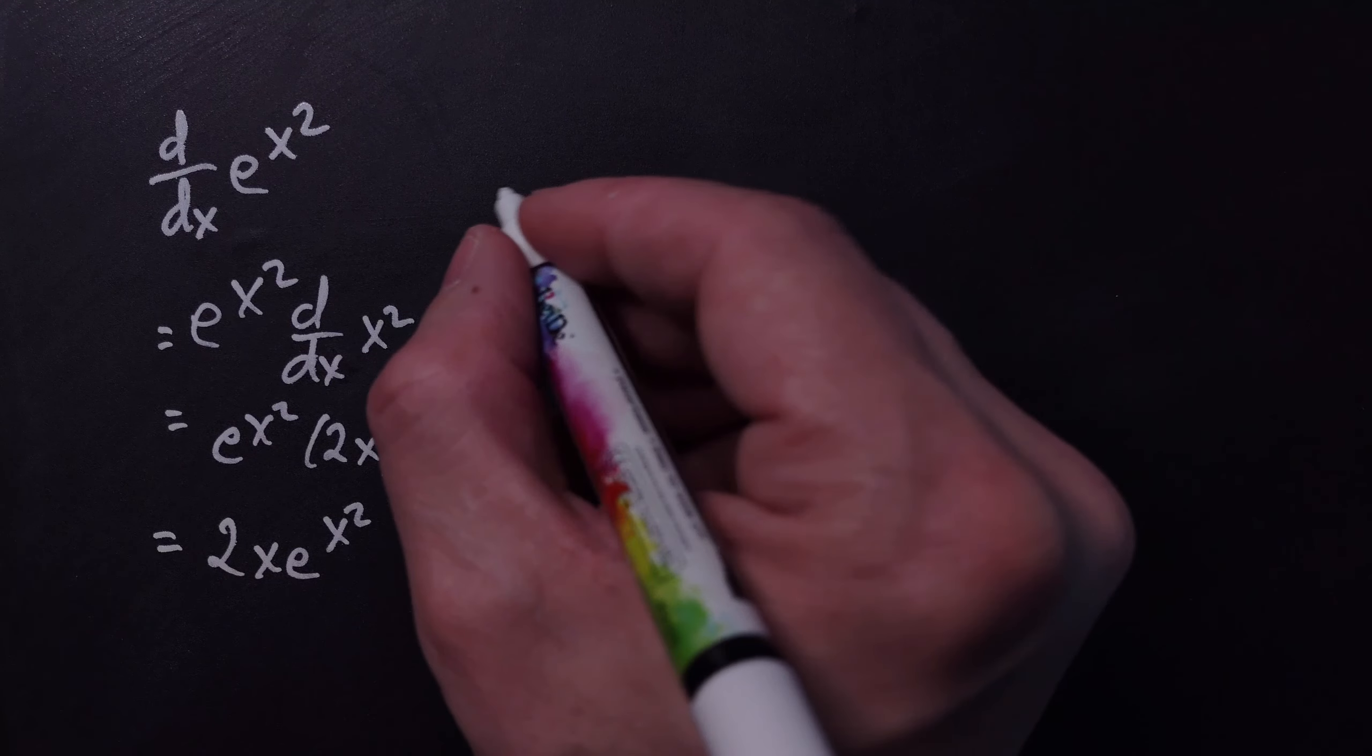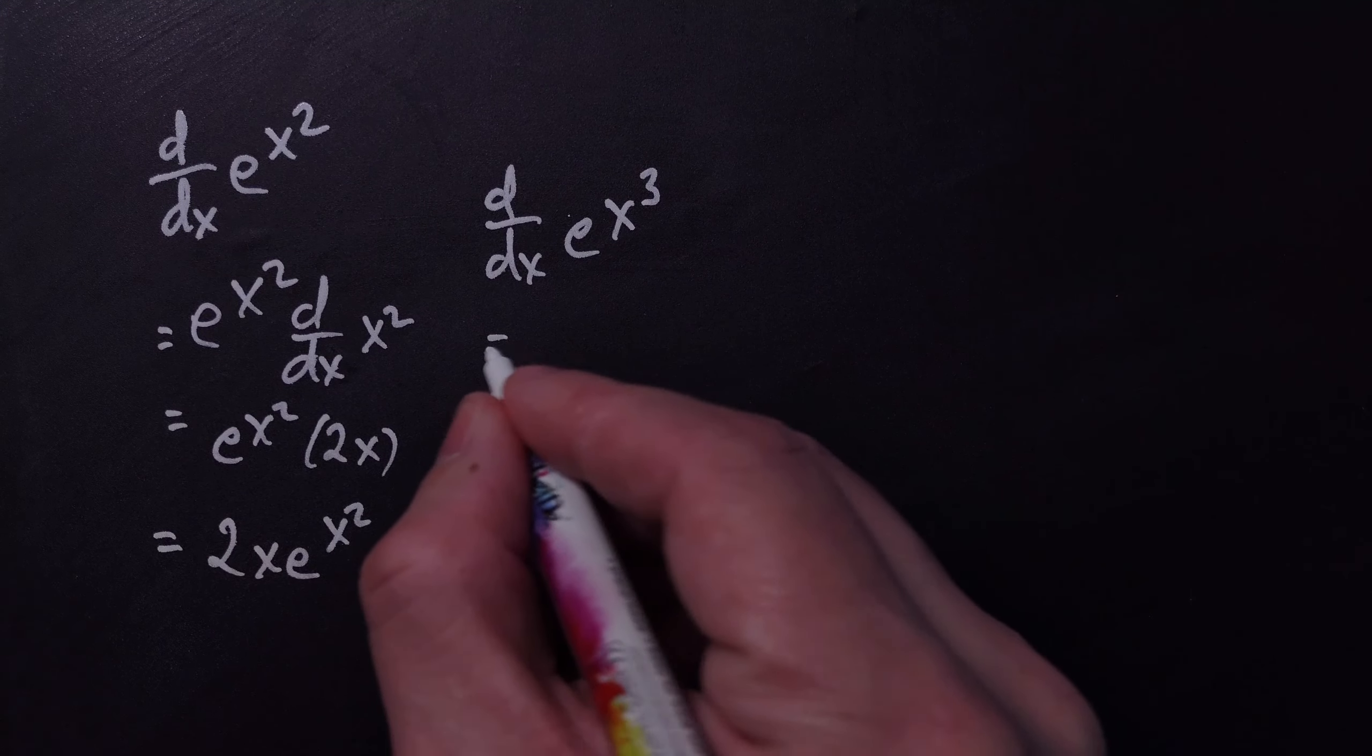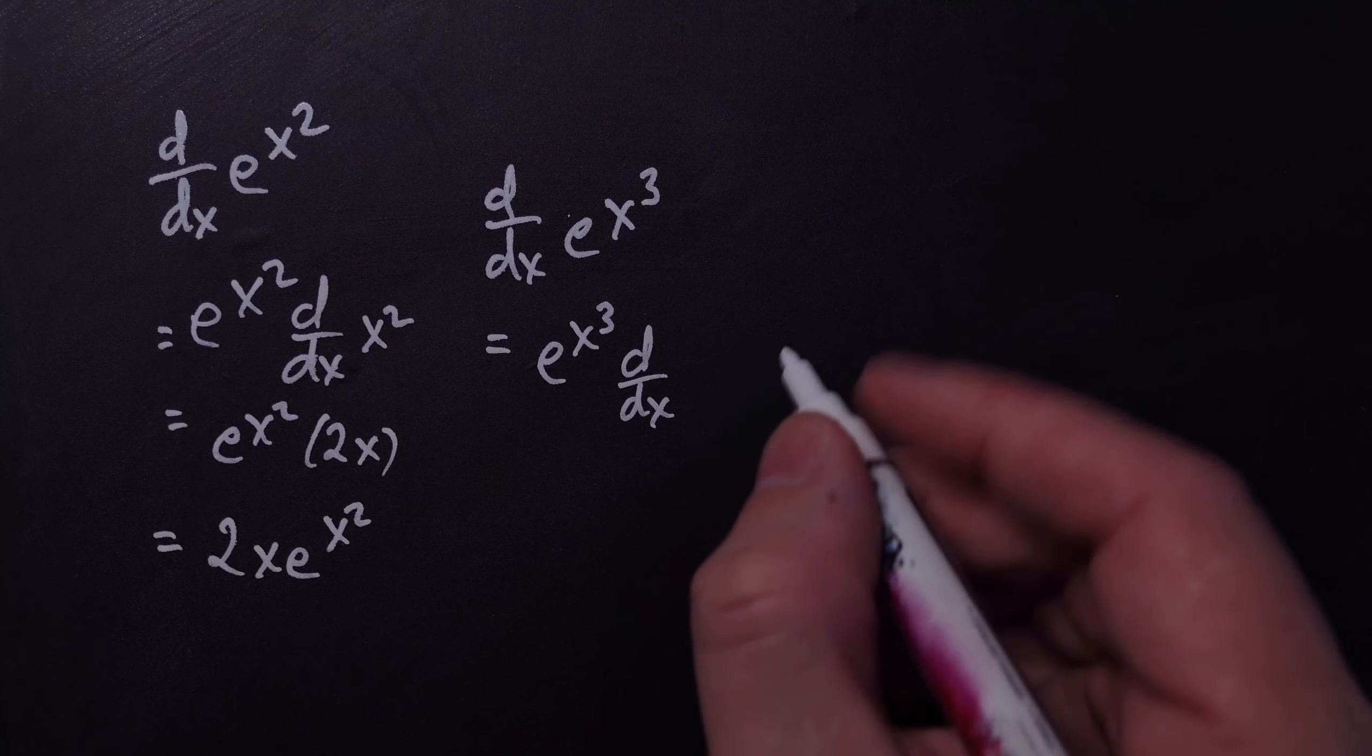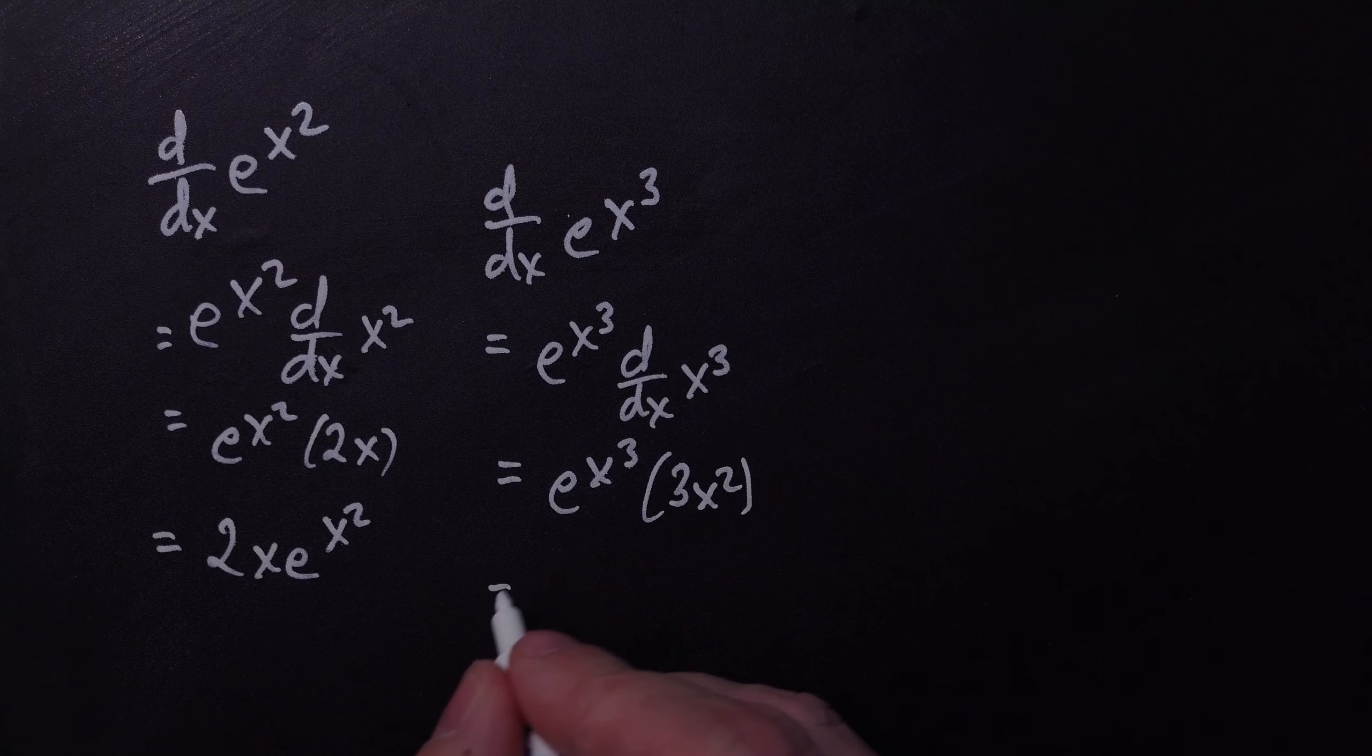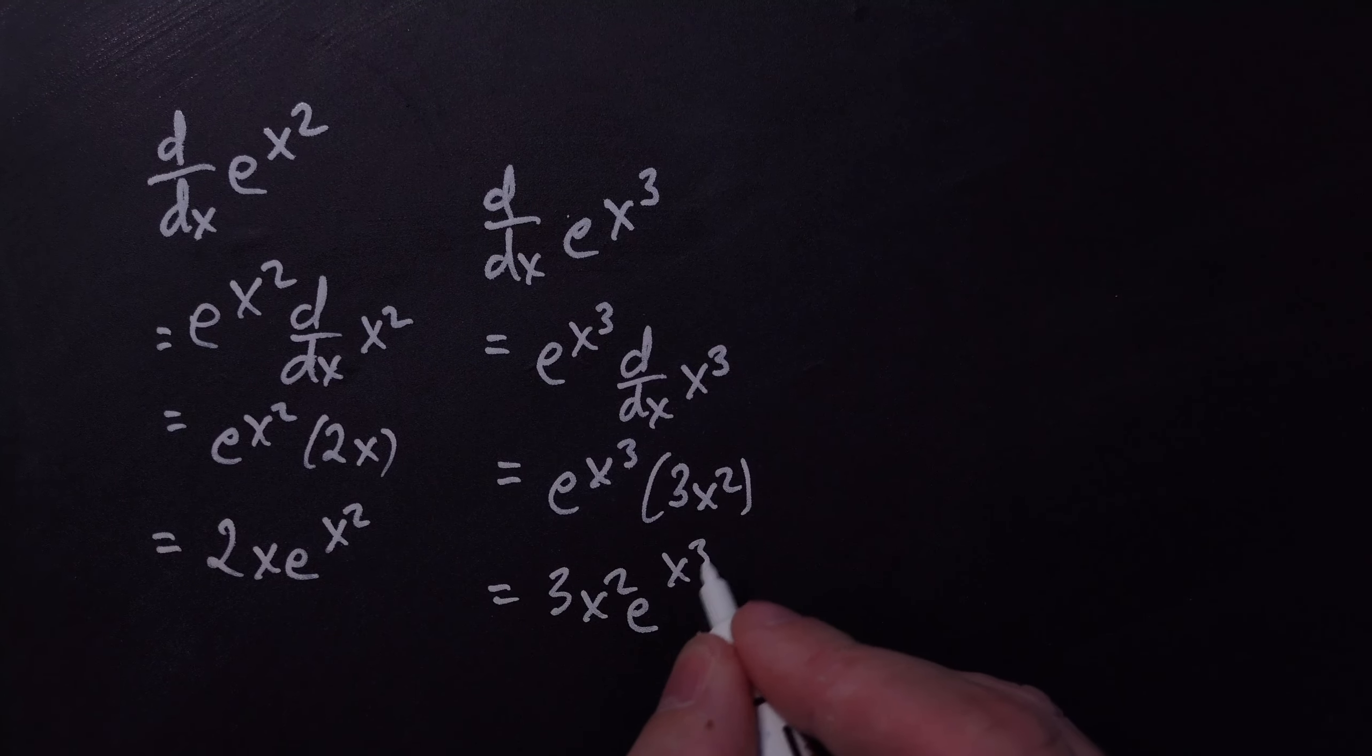Let's do another very similar example. So the derivative with respect to x of e to the x cubed. Same principle, so you just copy e to the x cubed, and then you multiply it by the derivative with respect to x of the x cubed. That then is going to give you e to the x cubed. And then this becomes, by the power rule, 3x squared. And then that usually goes out front, so we have 3x squared and then e to the x cubed.